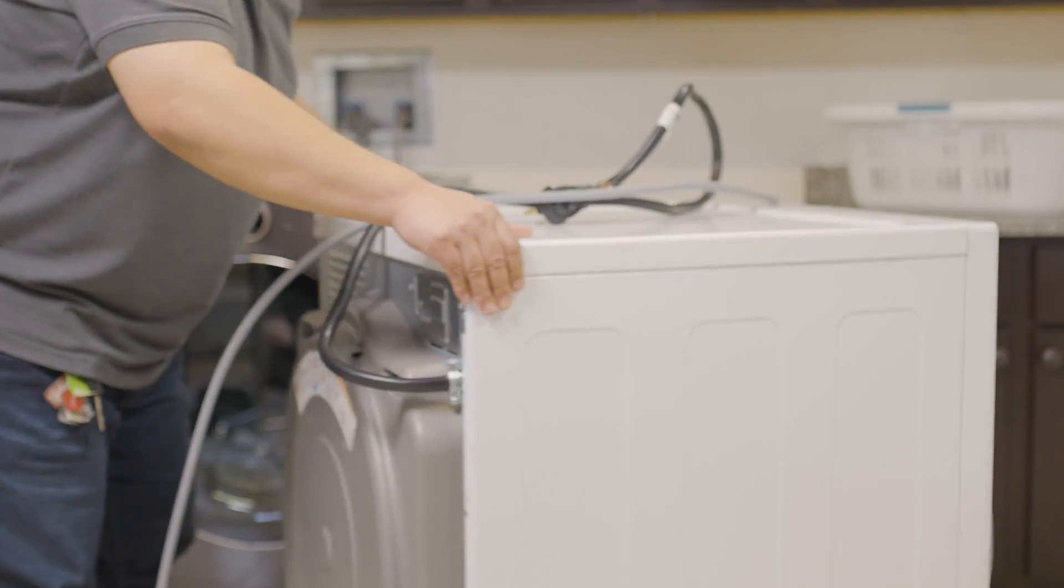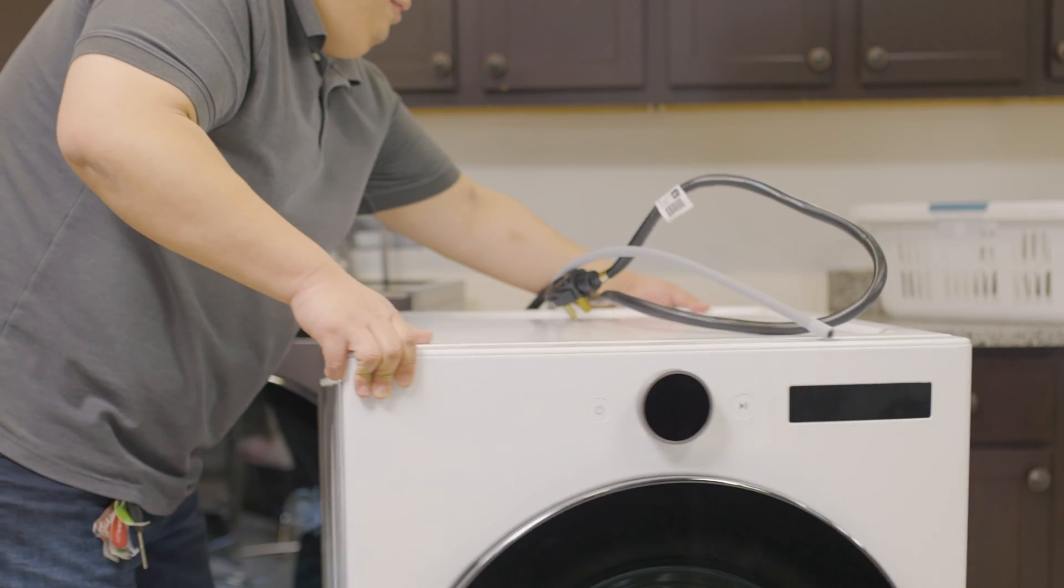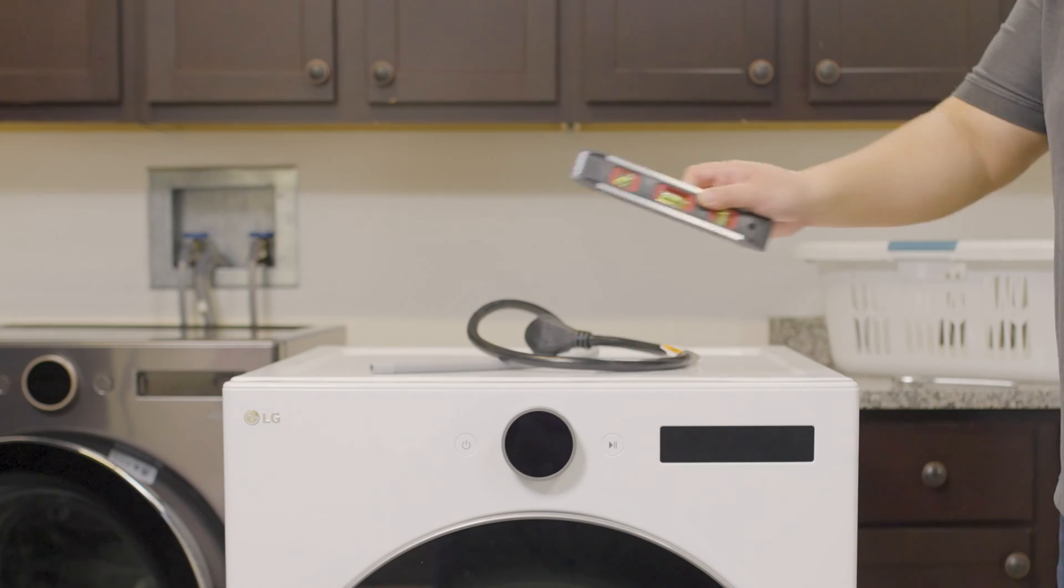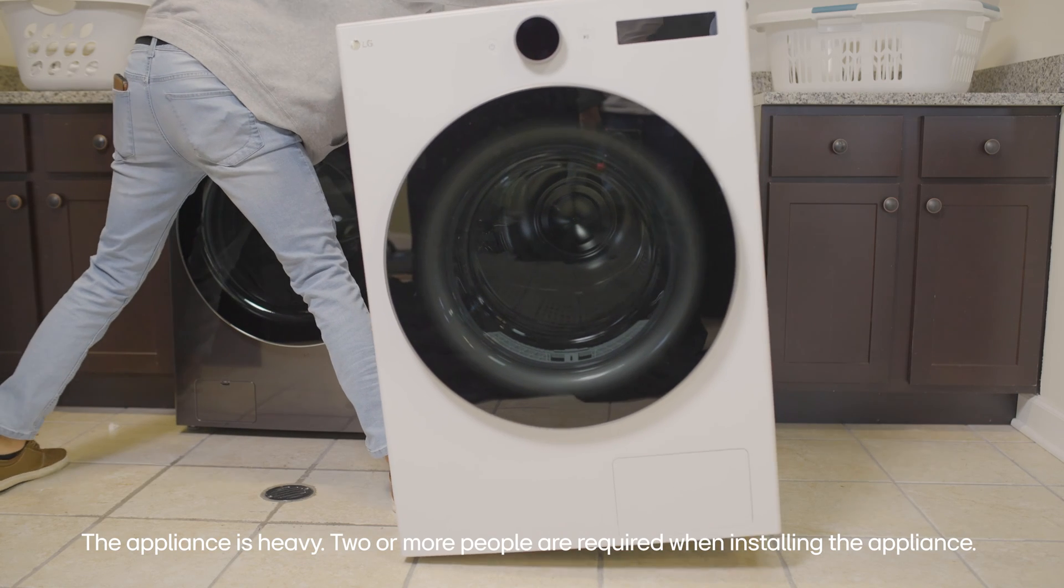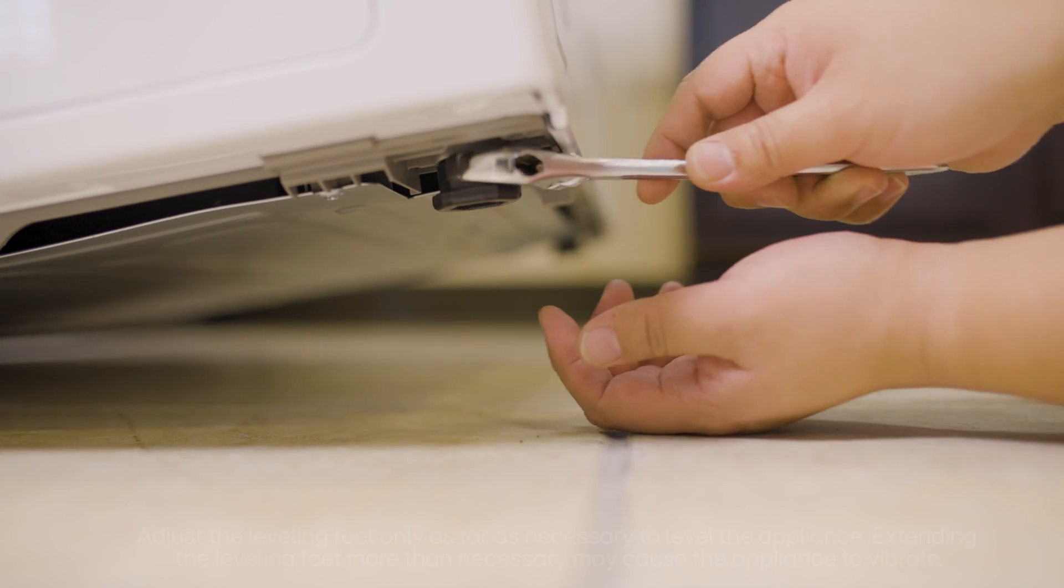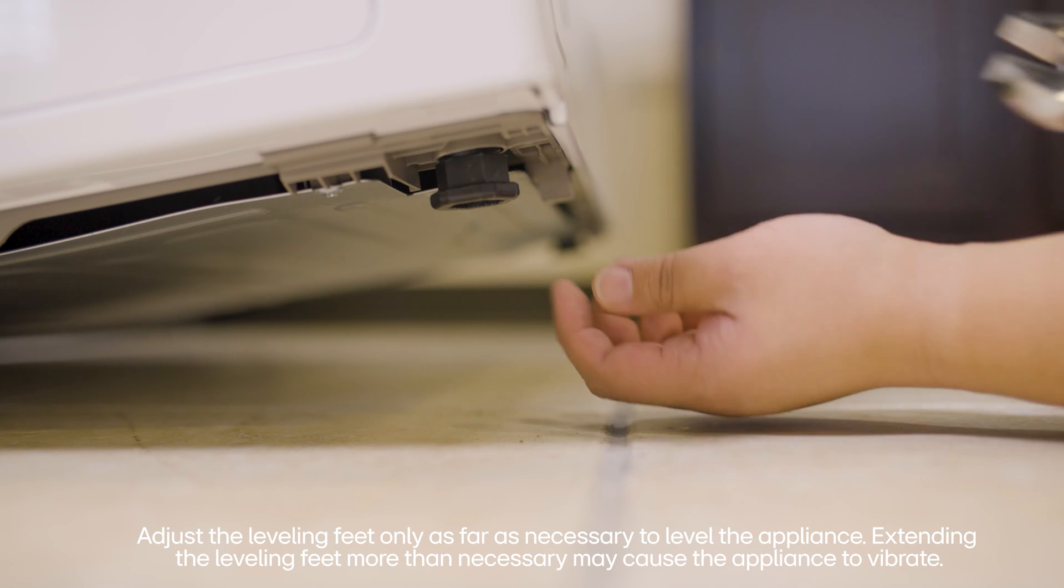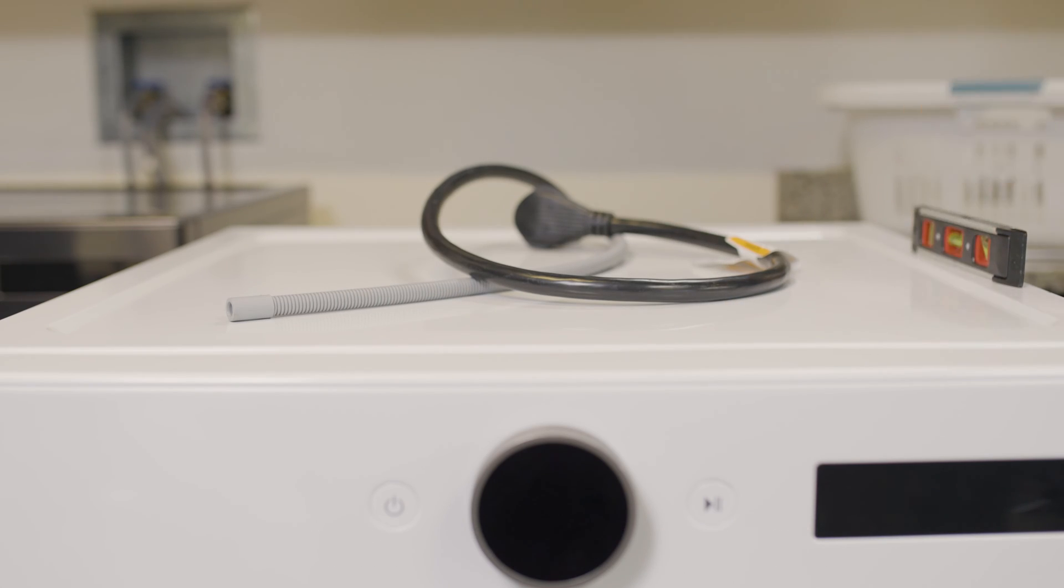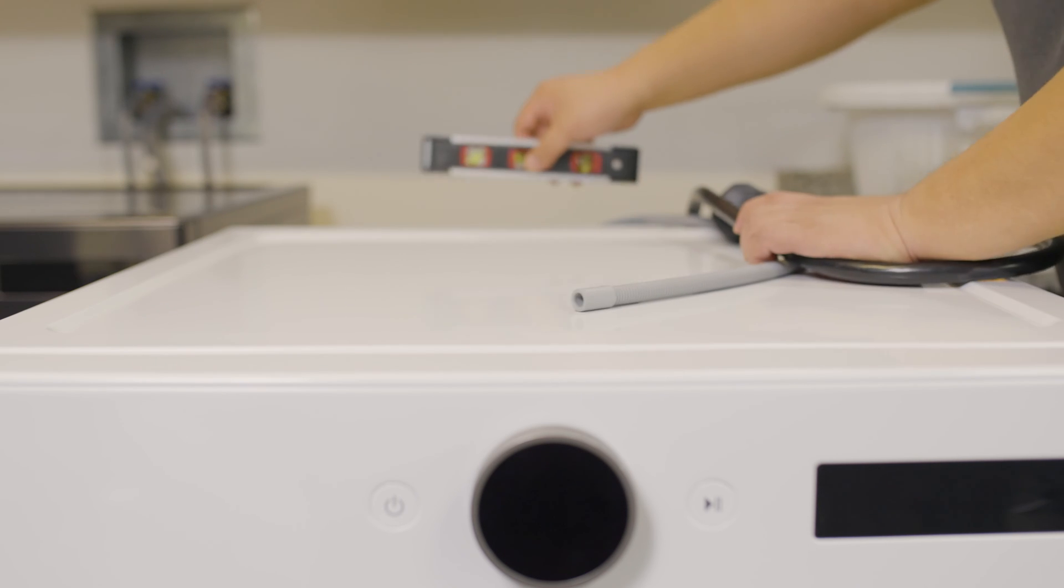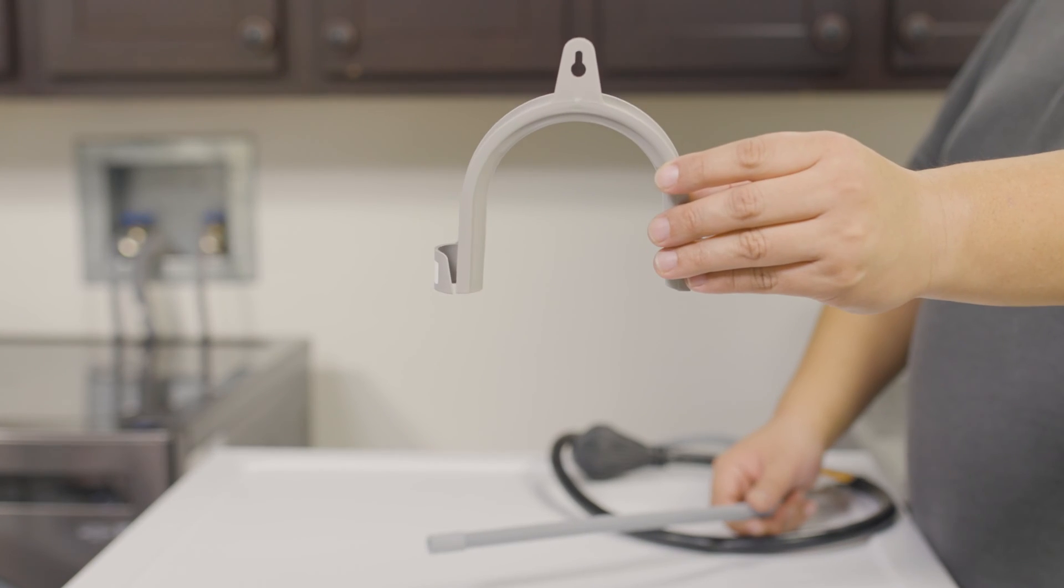Put the power cord and drain hose on top of the dryer, and then you want to move the dryer as close as you can but leaving yourself enough room on the sides to level. It's much easier to level the dryer if you have another person who can help tilt the back of the unit. This allows me to easily loosen the feet using a wrench and then adjust the feet with my hands. I want to make sure to level the unit on all four sides.